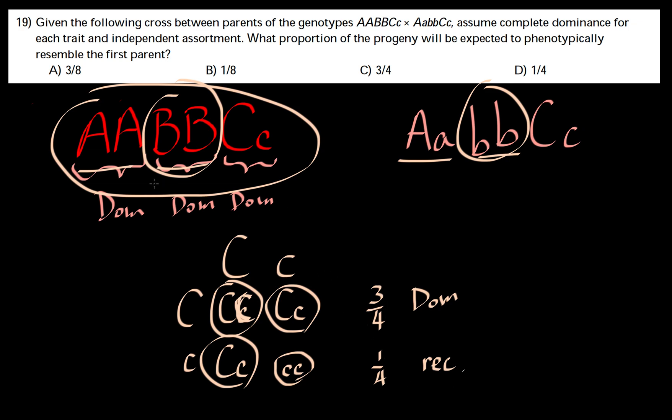A is 100% and B is also 100%. But when we cross heterozygous with heterozygous for C, there's a three out of four chance that it's going to be dominant, because we want the dominant trait. So the answer is three over four. In this case, it's C.